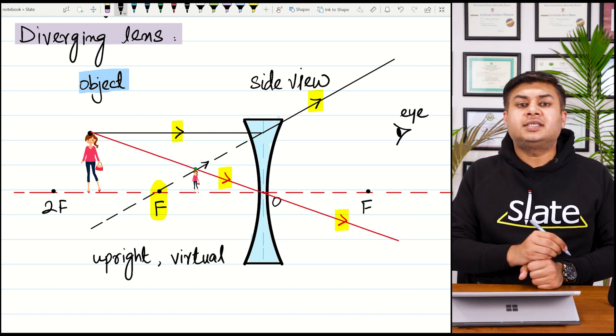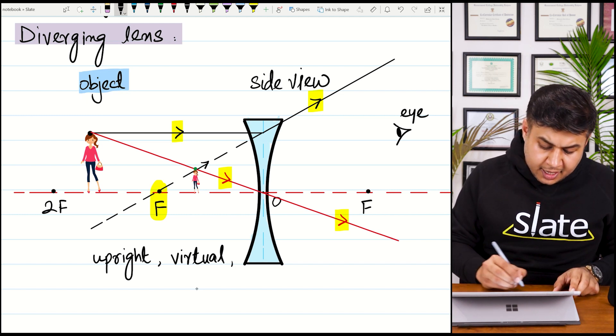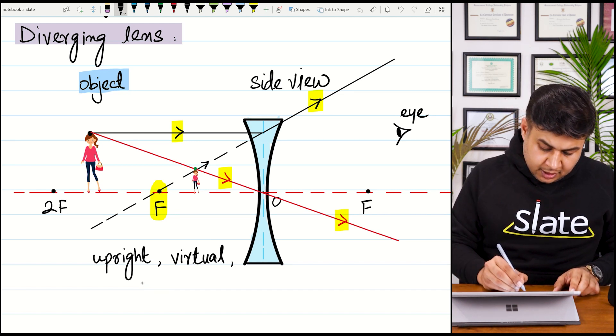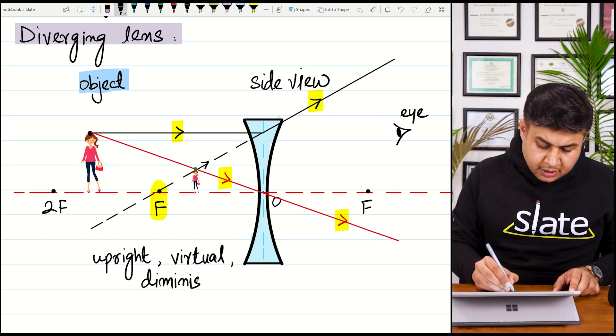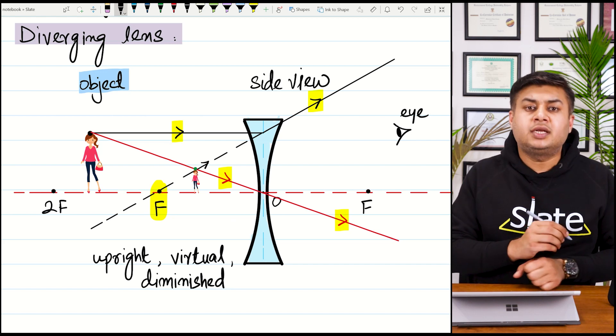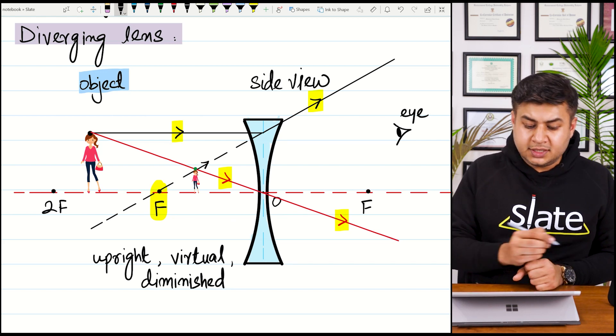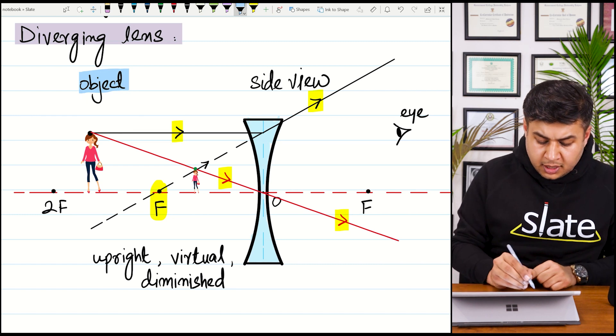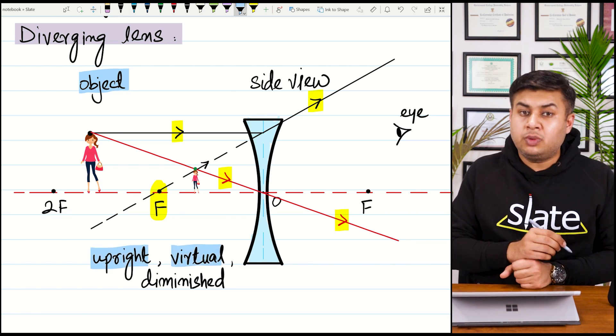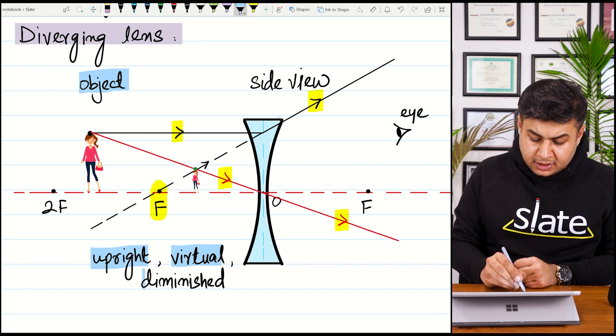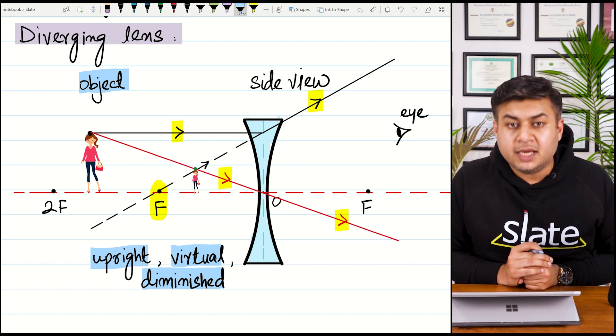Because when the rays are intersecting, one of those rays is a dotted ray, and the image is diminished. This image is much smaller than the object, so that's why it is diminished. So these are the three features of the image formed: it is upright, it is virtual and cannot be caught on screen, and it is smaller in size, which is also referred to as diminished.